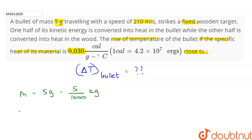We are given the speed of the bullet equal to 210 meter per second and we are given the specific heat of the material of the bullet c is equal to 0.030 calories per gram per degree celsius. It is given that one calorie is equal to 4.2 into 10 to the power 7 erg.